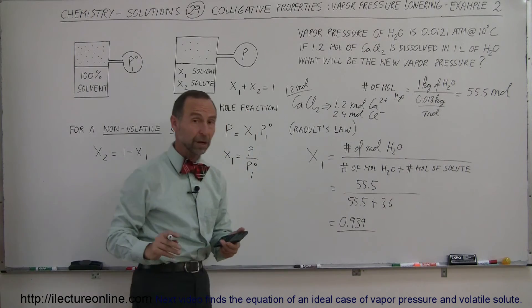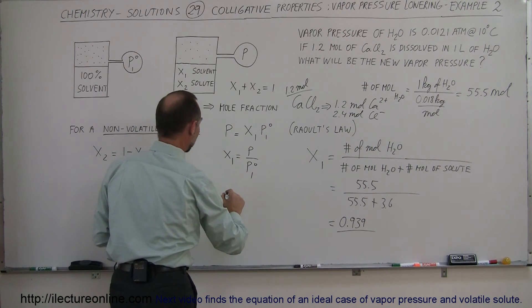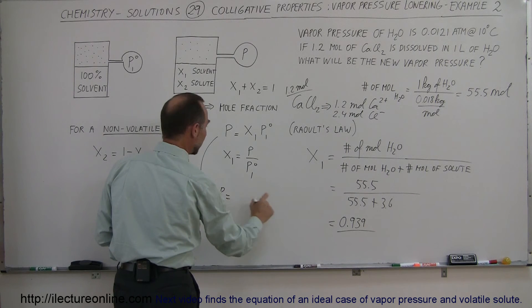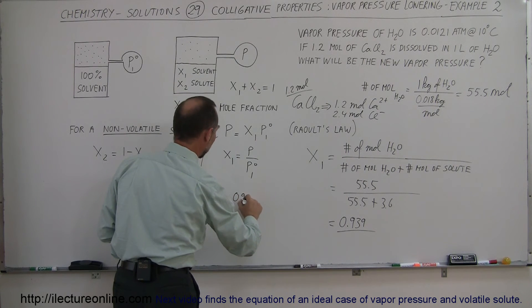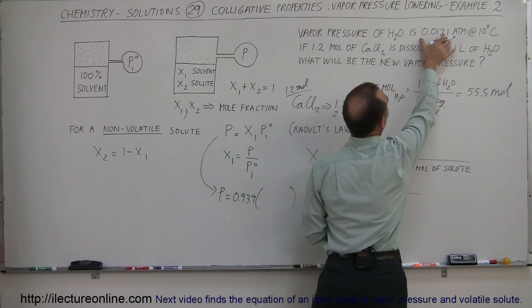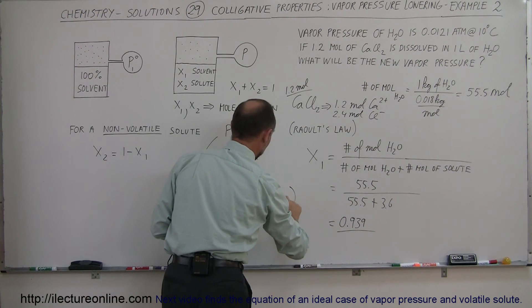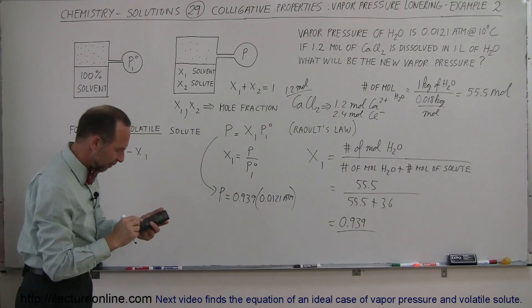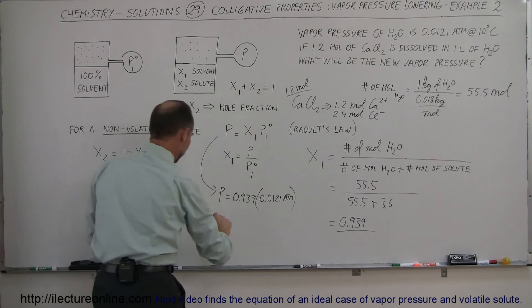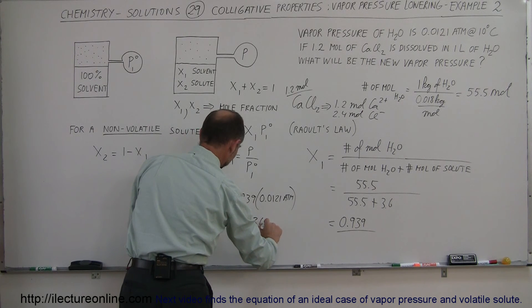Now we go ahead and plug that in to Raoult's Law. Therefore, the new pressure is going to be the mole fraction 0.939 times the original vapor pressure of solvent water at 10 degrees centigrade — 0.0121 atmospheres. Multiplying 0.939 times 0.0121 gives us the new pressure, equal to 0.01136 atmospheres.